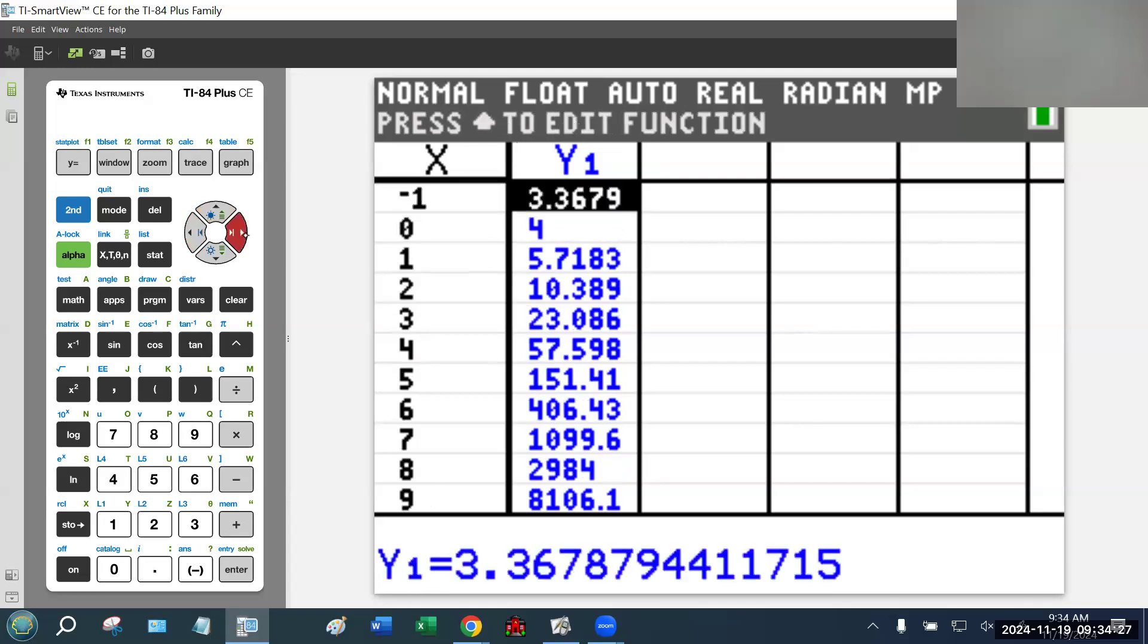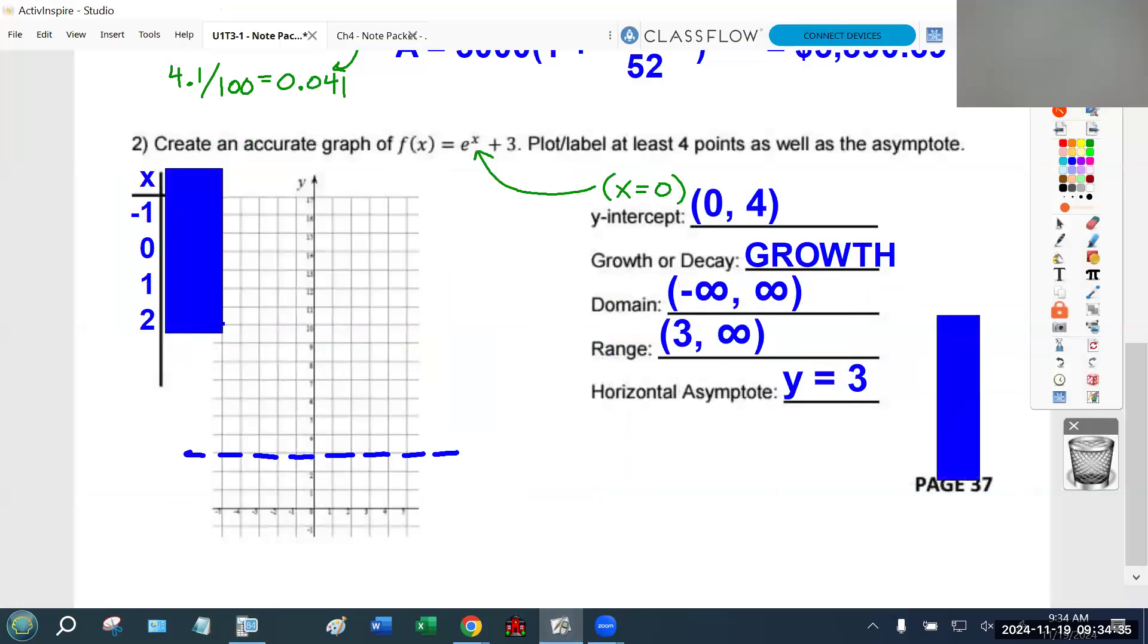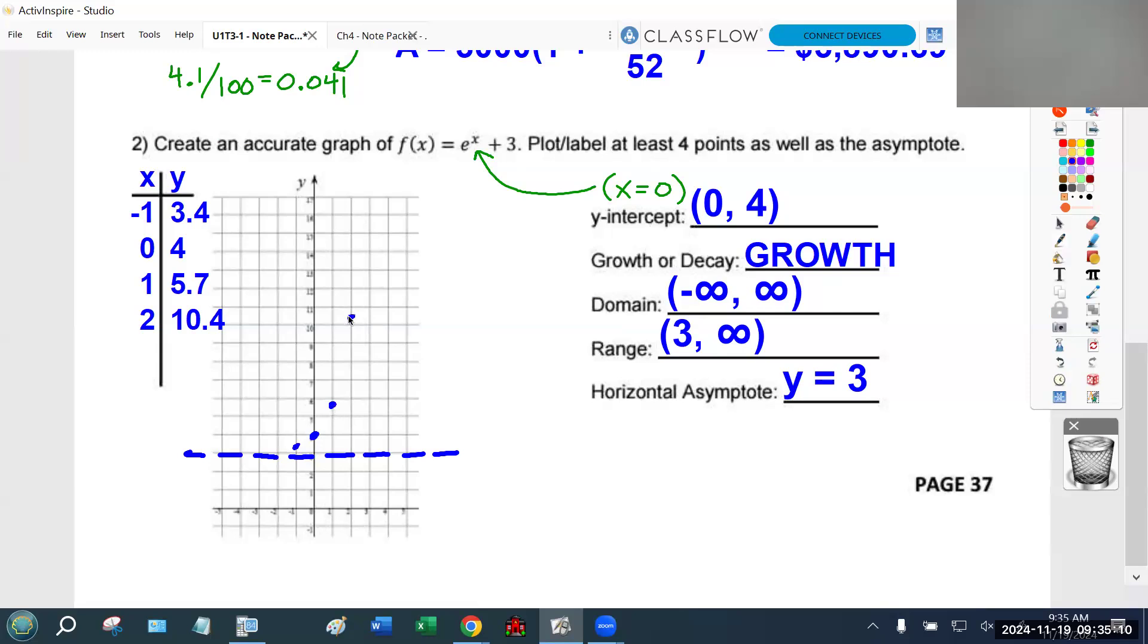The four points I'm going to use are (-1, 3.4), (0, 4), (1, 5.7), and (2, 10.4). Starting at negative 1, I'll graph now. Negative 1 and 3.4. Zero and 4 - that is the only point that I would expect to be graphed perfectly because that's just nice clean numbers. Don't be confused. Remember, our asymptote is at y = 3, so if you have a point at 0 comma 4, it's only one spot above that line. Then I've got 1 comma 5.7 and 2 comma 10.4. The only point I'd be truly picky about is 0 comma 4 - that one's got to be graphed perfectly. The other three just need to be reasonably close. Questions?